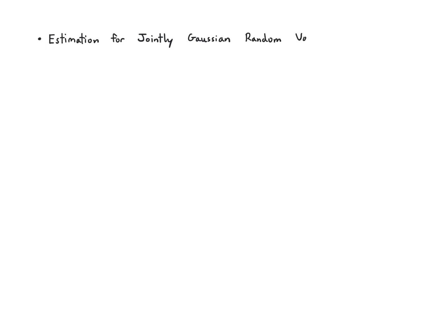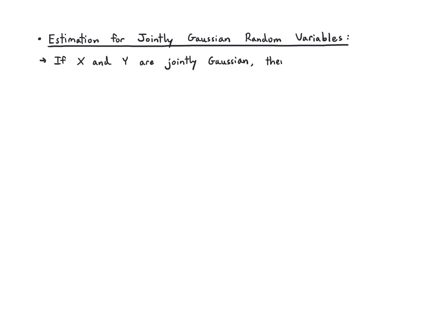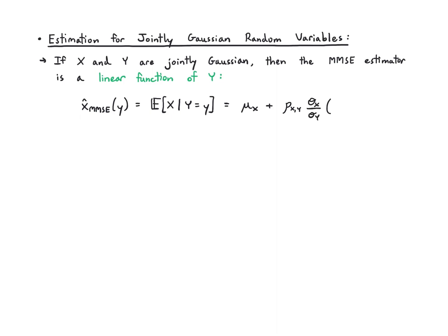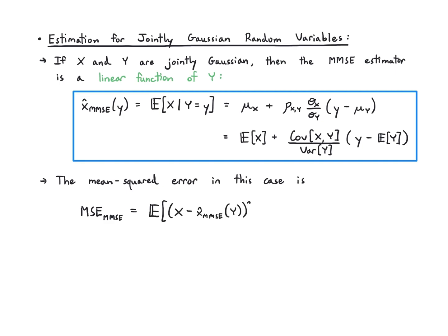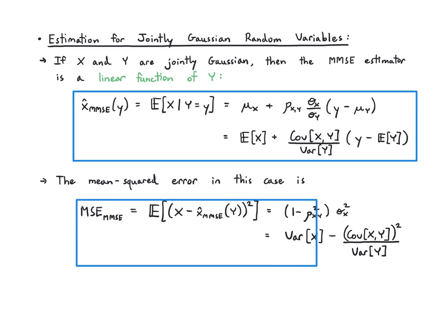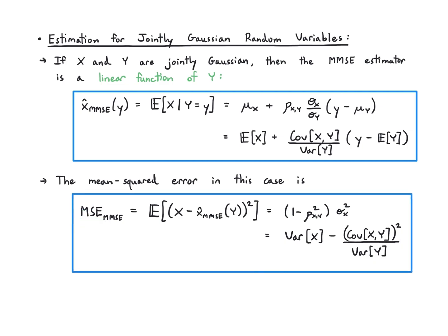Finally, if x and y are jointly Gaussian, you're in luck: the MMSE estimator is a linear function of y. Specifically, the conditional expectation of x given y equals μ_x + ρ_{xy}(σ_x/σ_y)(y − μ_y), or equivalently μ_x + Cov(x,y)/Var(y) · (y − μ_y). The MSE simplifies to (1 − ρ²)σ_x², which also equals Var(x) − Cov(x,y)²/Var(y). So for jointly Gaussian variables, computing the MMSE estimator and its MSE is straightforward.